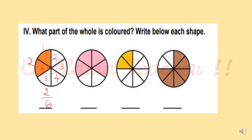Similarly for the remaining shapes. The next shape has 6 total parts and 4 parts are shaded — so 4 by 6. The next picture has 8 total parts and 2 are shaded — so 2 by 8. The following picture has 8 equal parts and 6 parts are shaded — so 6 by 8.